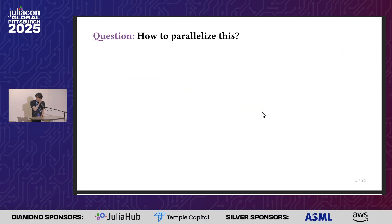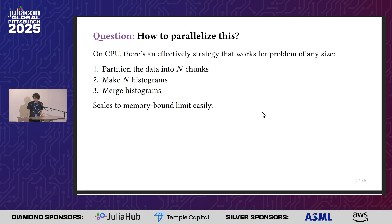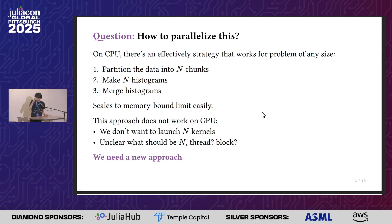The question is how to parallelize this onto GPUs. On CPUs, if you want to parallelize, it's fairly straightforward: you partition the data into N chunks, make N histograms, and merge them. If you pick a sensible N — for example, the number of physical cores — it's usually very good and you'd hit your memory bound before using all your cores. This approach does not work on GPU because we don't want to launch N kernels, and it doesn't answer how to do one of them efficiently, since you don't want to treat one GPU core as a CPU core.